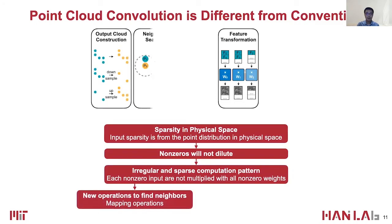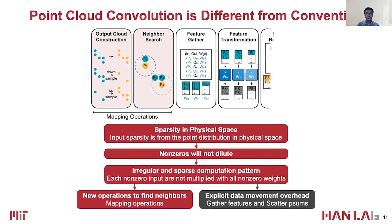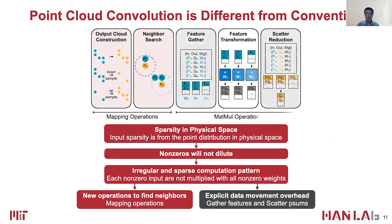One is that new operations are introduced to calculate the coordinates and find the neighbor points for the convolution, such as farthest point sampling and kernel mapping. We refer to these operations as mapping operations. The other is that we need to explicitly gather features and scatter-aggregate the partial sums, causing huge data movement overhead.